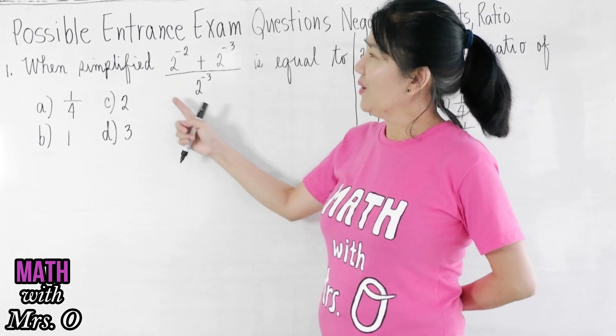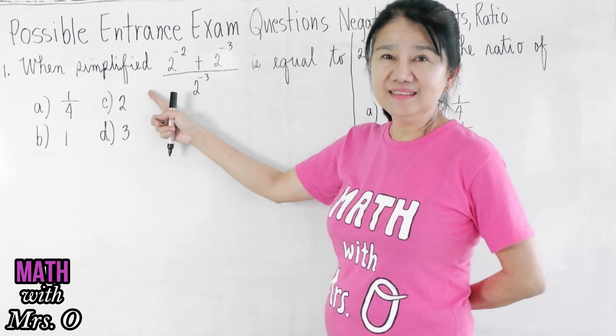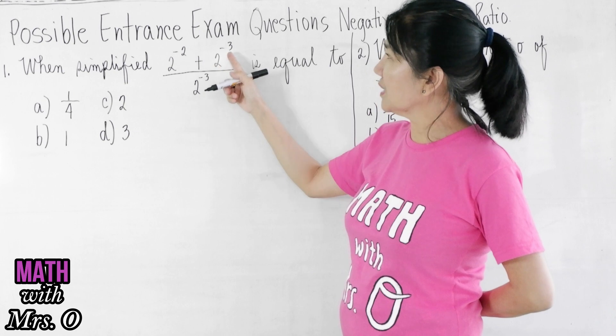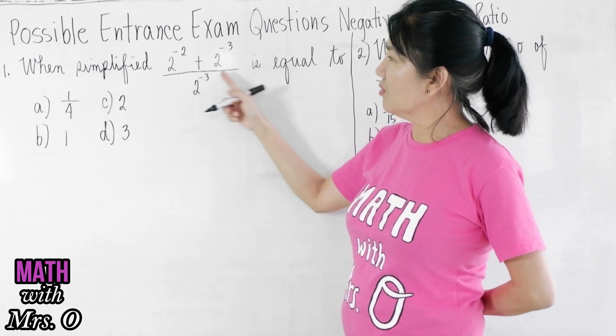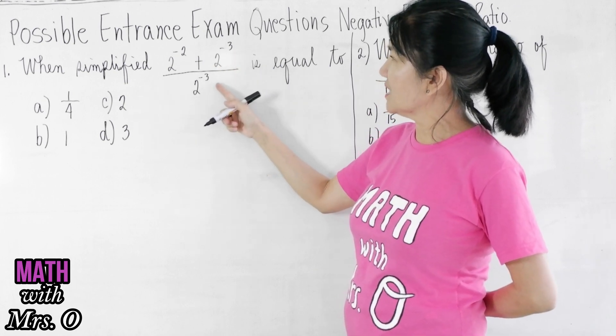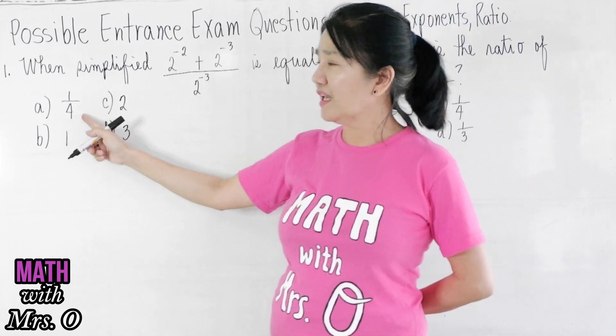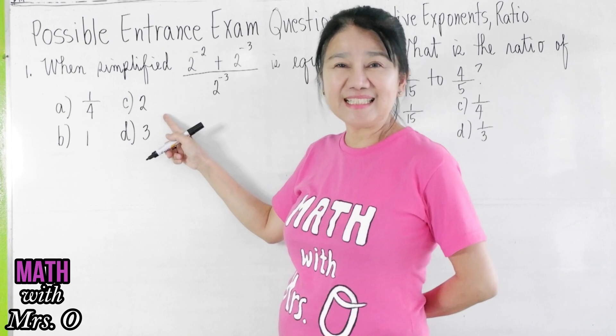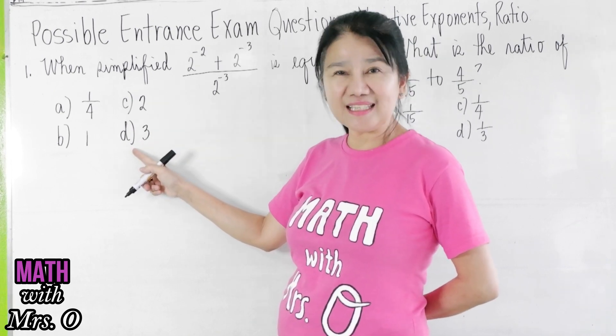Problem number one: when simplified, 2 to the negative 2 plus 2 to the negative 3 all over 2 to the negative 3 is equal to: a) 1/4, b) 1, c) 2, and d) 3.